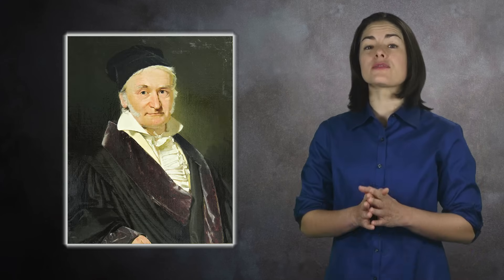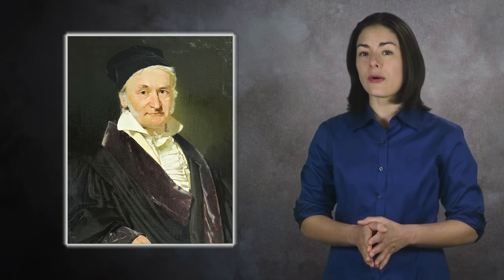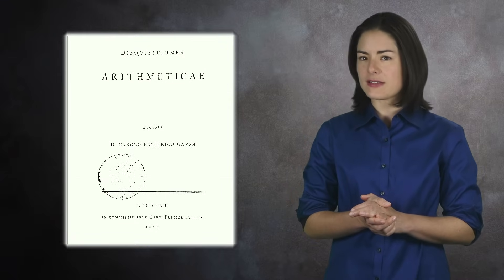In 1798, at the age of 21, Karl Friedrich Gauss wrote a classic book called the Disquisitionis Arithmeticae.